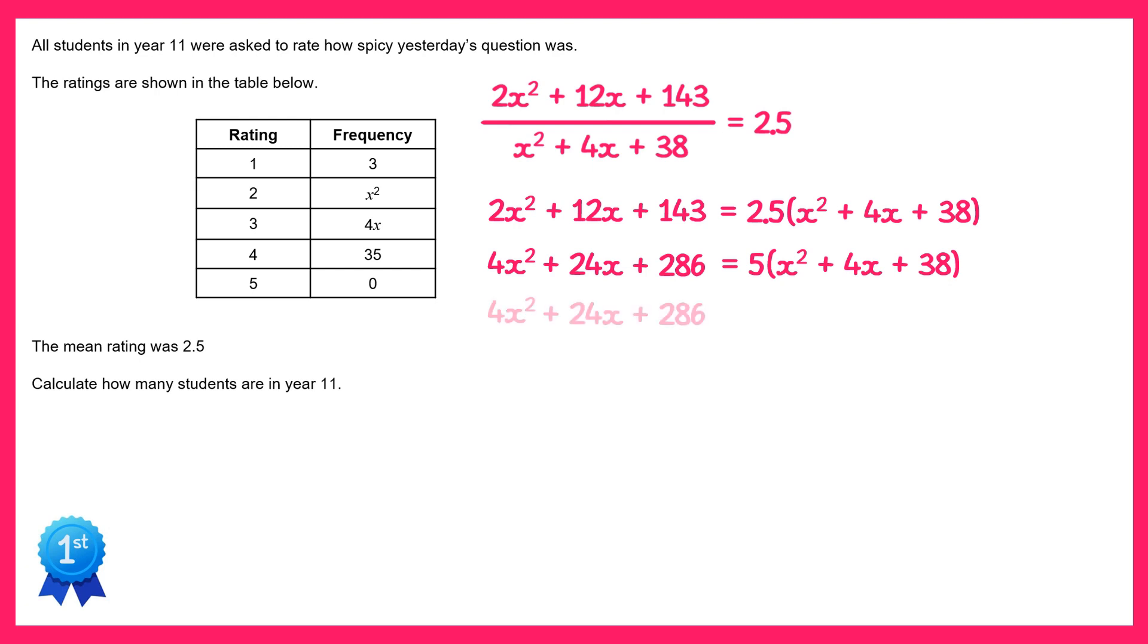Now we'll leave the left hand side as it is and multiply out this bracket on the right, so we get 5 times x squared which is 5x squared, 5 times 4x which is 20x, and 5 times 38 which is 190.